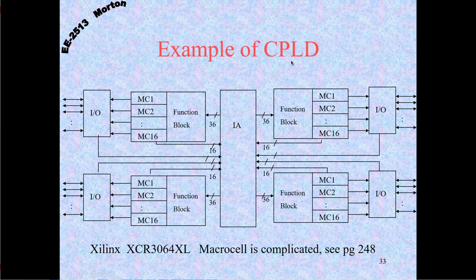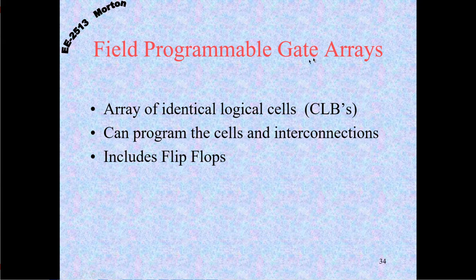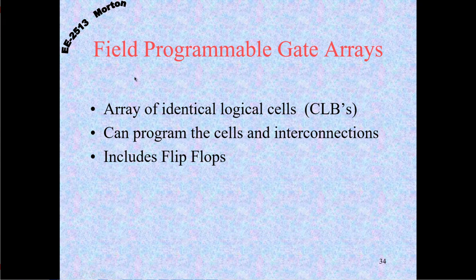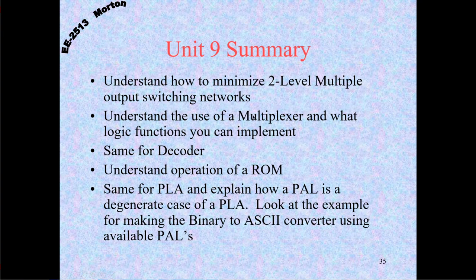When you go from the CPLD to the next level, you go to FPGAs. FPGAs can have hundreds of thousands of logic cells, so these can be quite large chips. Most of the cutting-edge integrated circuit development — besides Intel and AMD processors and graphics cards — the next very complicated stuff would be FPGAs. A lot of these companies are using 10-nanometer technology now, so they're very much cutting-edge, big integrated circuits.